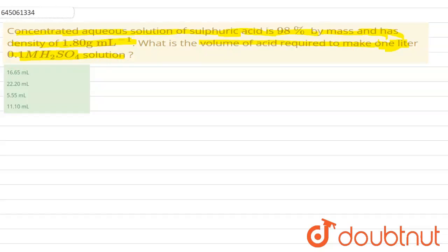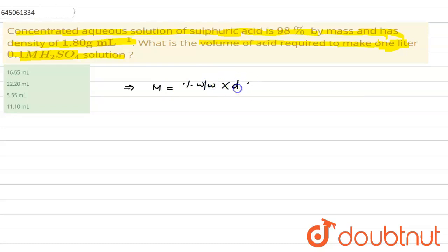First of all, we will find out the molarity of the initial solution. We know the relation between molarity and density with mass percentage: molarity equals percentage weight by weight into density into 10, divided by molar mass.